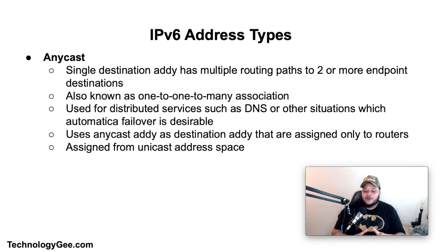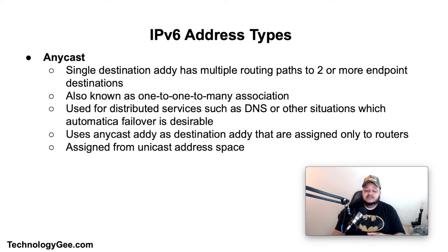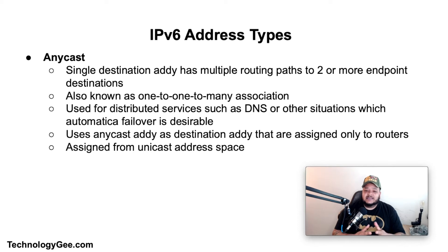Anycast is a network addressing and routing methodology in which a single destination address has multiple routing paths to two or more endpoint destinations, also known as a one-to-one-to-many association. Anycast can be used for distributed services such as DNS or other situations where automatic failover is desirable. In IPv6, anycast addresses are used as destination addresses assigned only to routers, and they are assigned from the unicast address space.